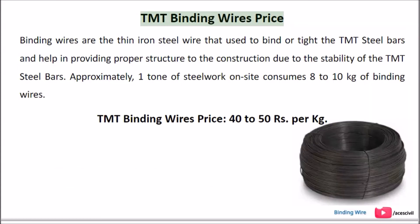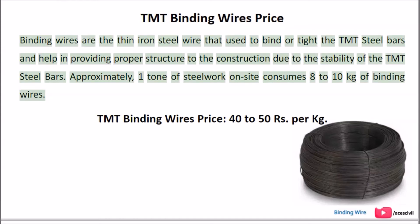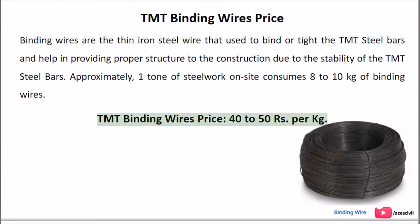TMT Binding Wires: These are thin iron steel wires used to bind or tie TMT steel bars and help in providing proper structure to the construction due to the stability of the TMT steel bars. Approximately, one tonne of steel work on site consumes 8 to 10 kg of binding wires. TMT Binding Wires Price: Rs. 40 to 50 per kg.